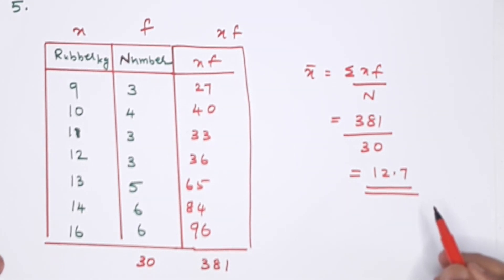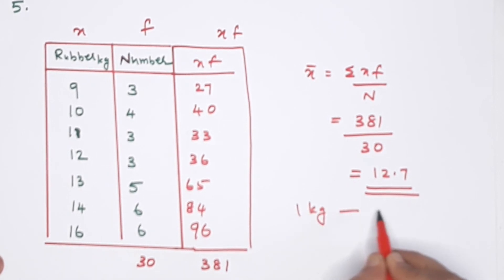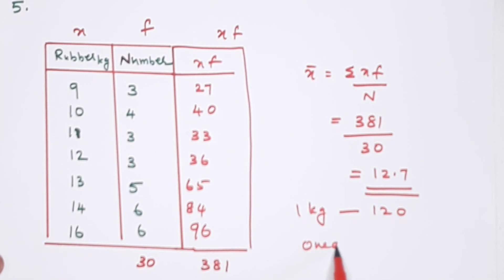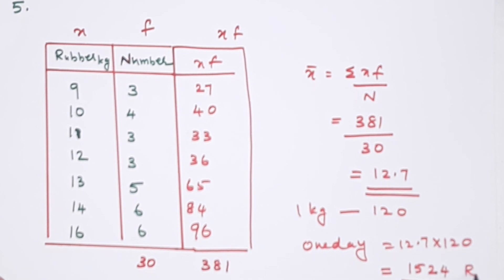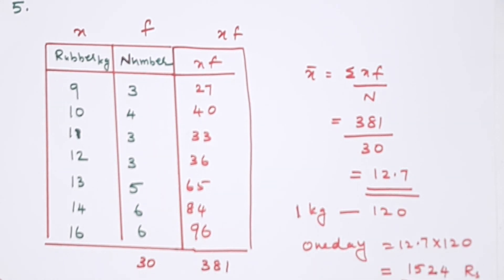Second part: price of rubber is 120 rupees per kilogram. What is his average income per day this month? Average income equals 12.7 multiplied by 120, giving approximately 1,524 rupees. This is the average income per day this month.